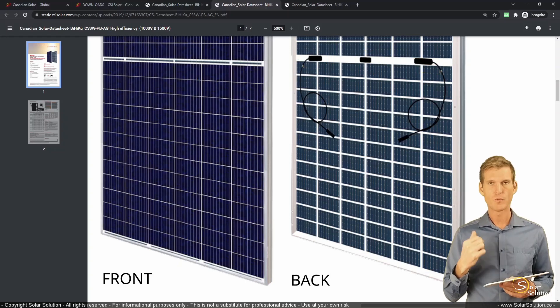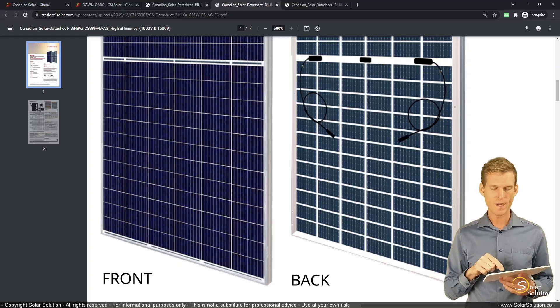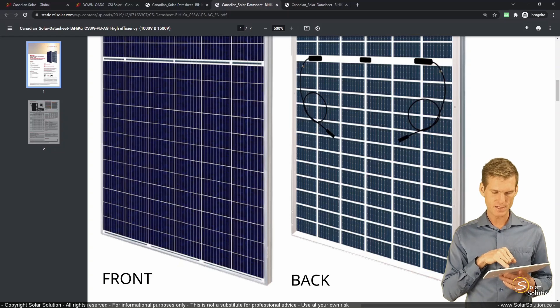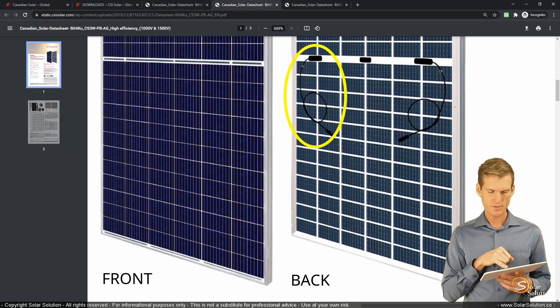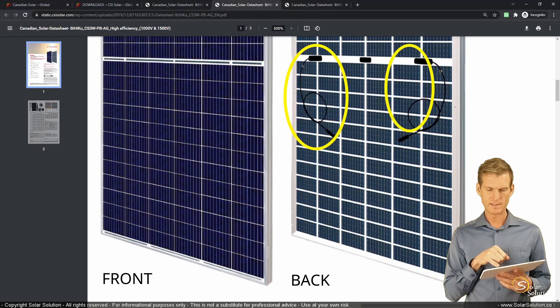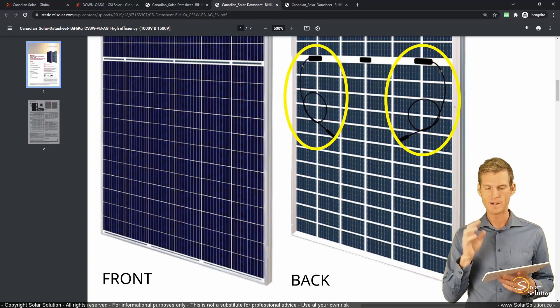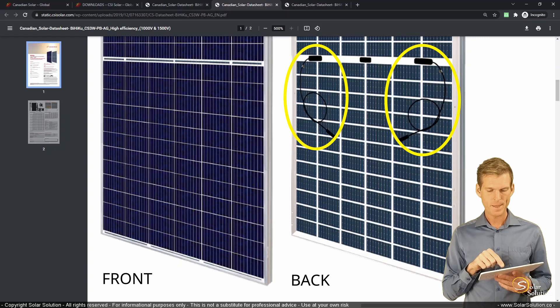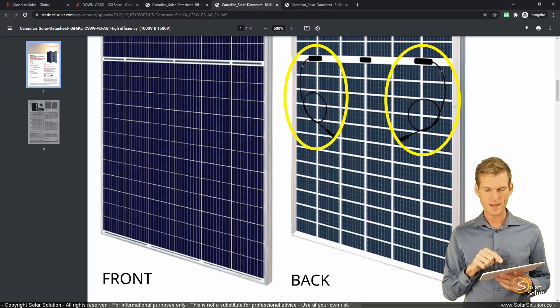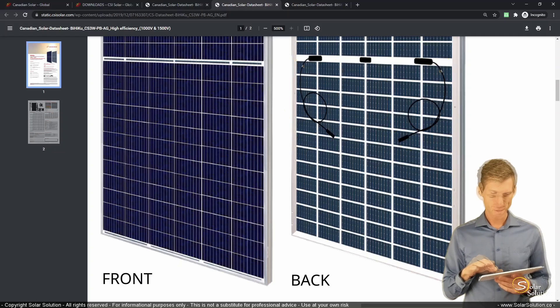The wiring here is as per what I've just explained you on the whiteboard. Because you can see the two main connectors, probably MC4 connectors, whereby you can connect this module to another module or wire it up to your charge controller. And then each and every small little black junction box will probably have its own bypass diode.